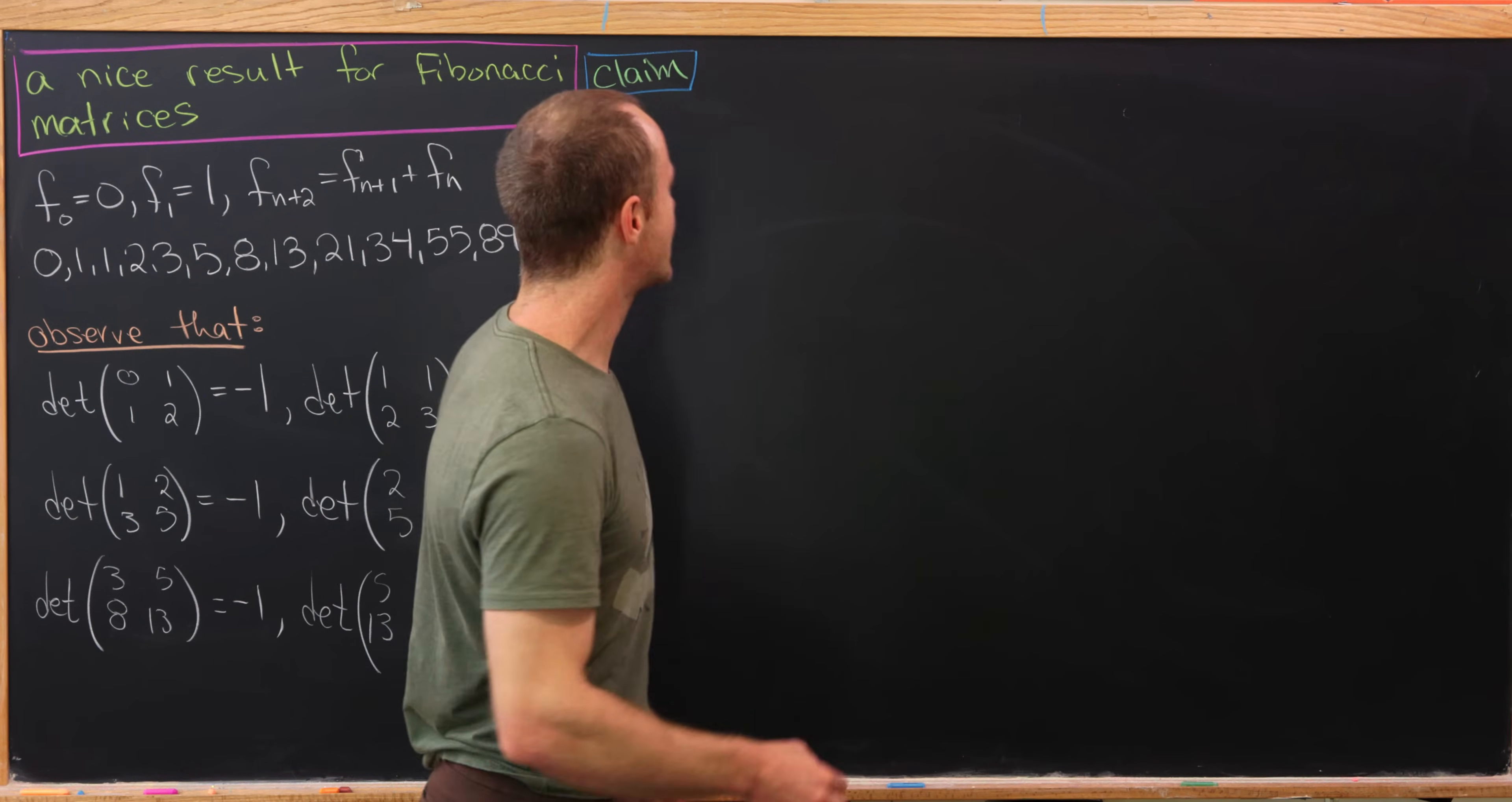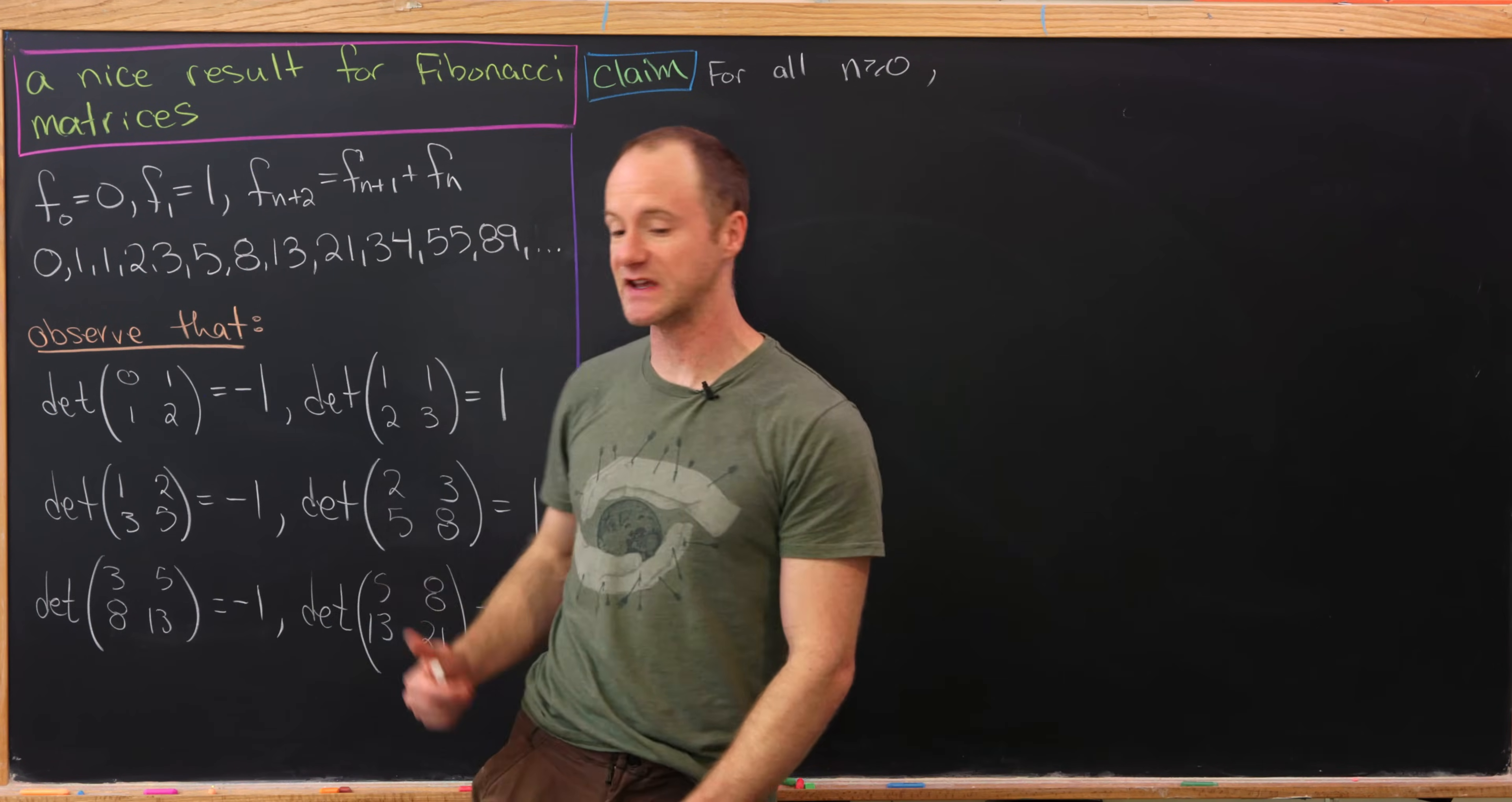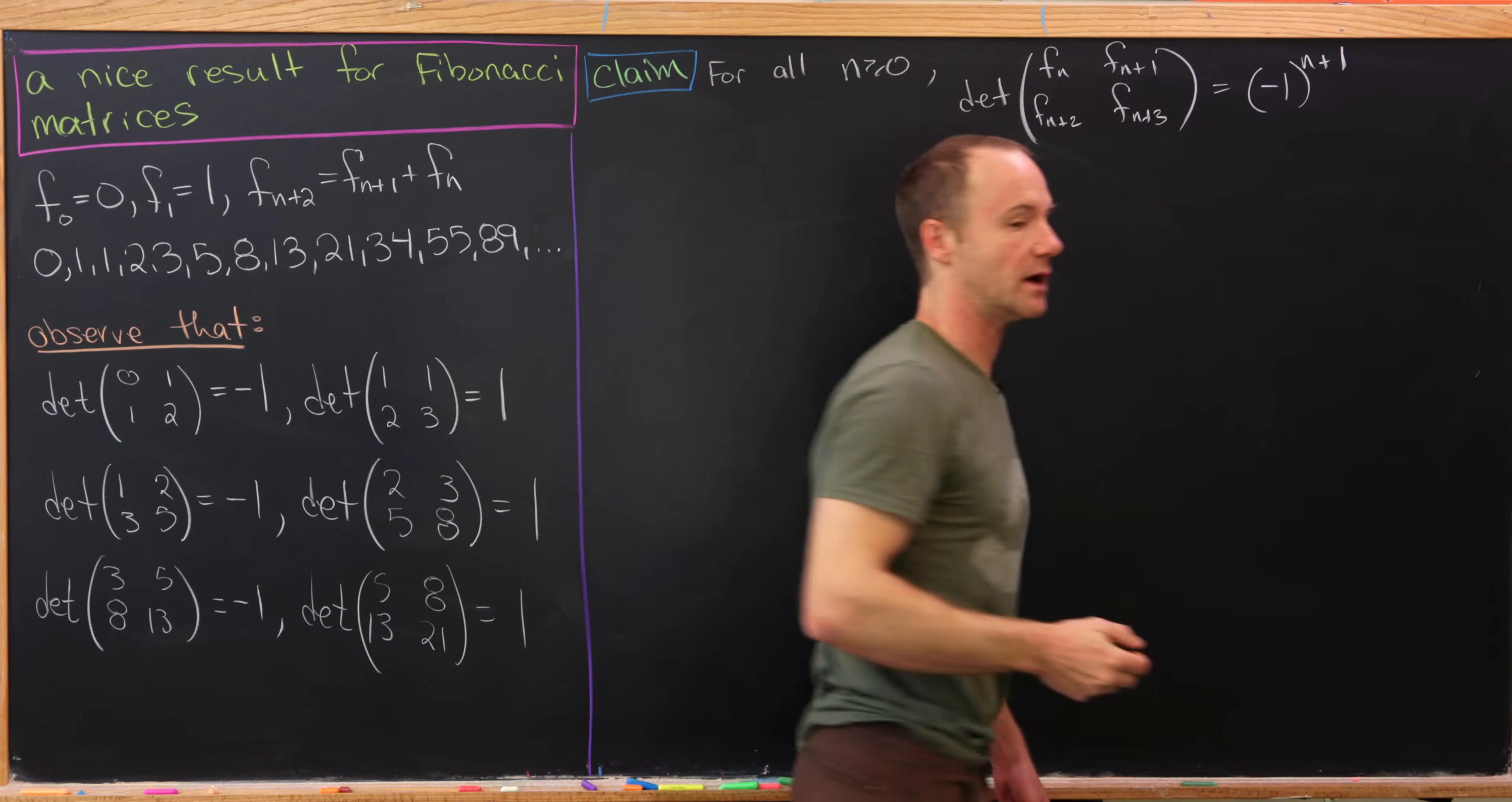So it seems like we have the following result, which we will prove. So for all n bigger than or equal to 0, the determinant of the matrix built by Fibonacci numbers follows this pattern. So in other words, the determinant of Fn, Fn+1, Fn+2, Fn+3 is equal to negative 1 to the n+1.